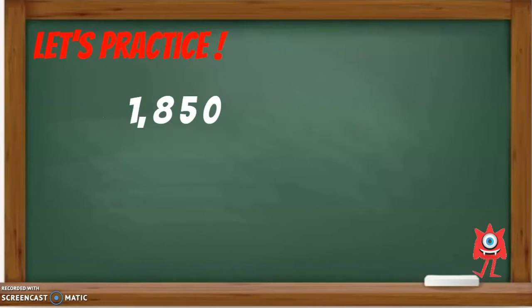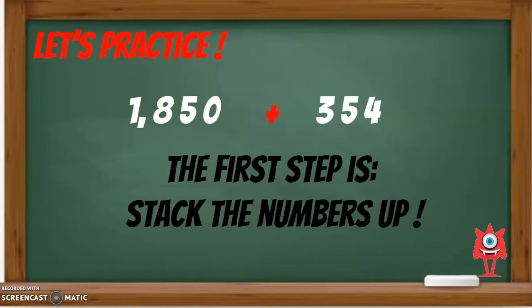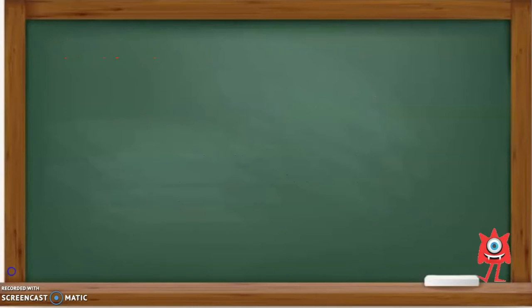Here we have 1,850 plus 354. The first step is to stack the numbers up so we can add each number place. Be sure to line up the ones places and draw your line and plus symbol.